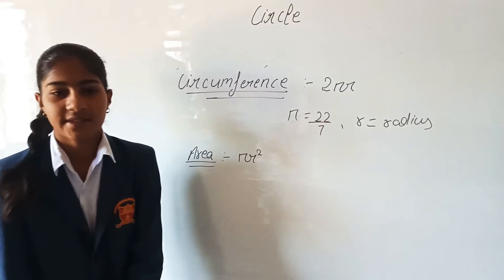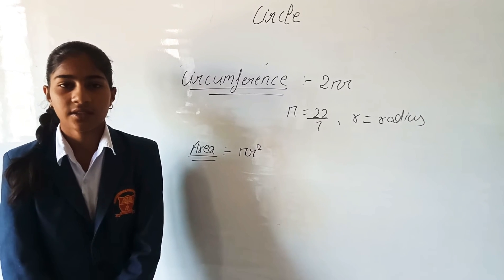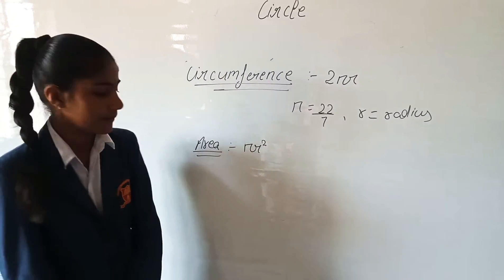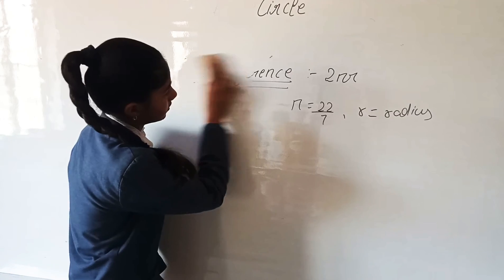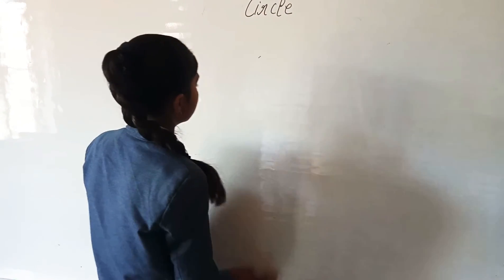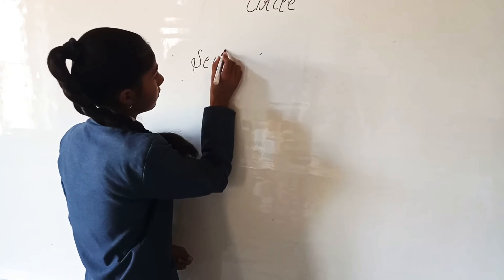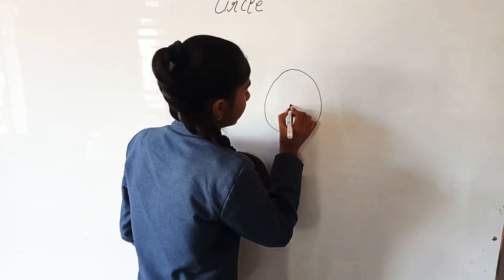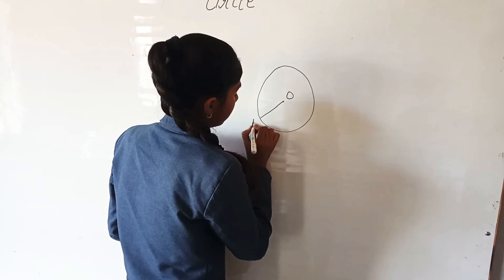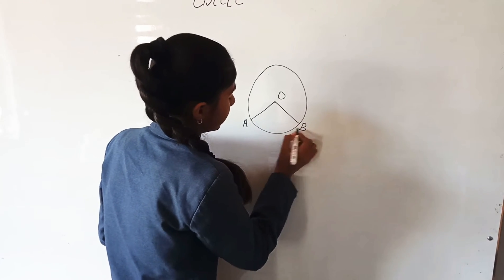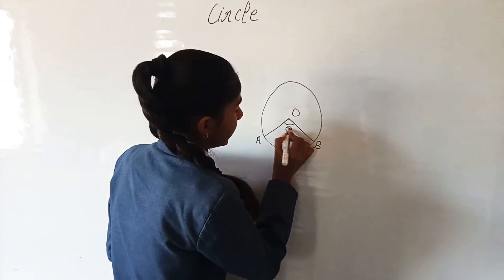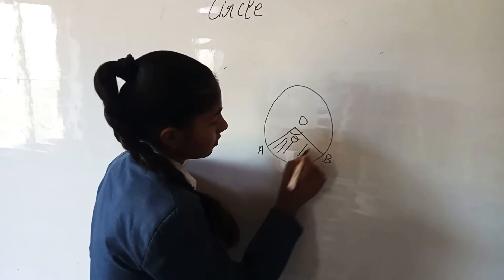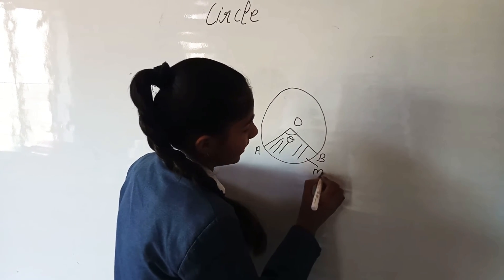Our next topic is sector and segment. What is a sector? The region in a circle bounded by two radii and an arc is known as a sector. Let this circle have center O, with two radii OA and OB. The angle made by the two radii is known as theta. The region AOB is known as the minor sector.